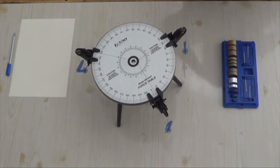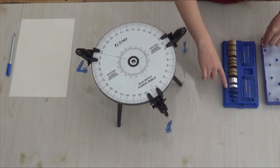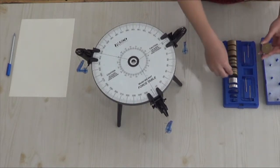As you can see from the setup, three pulley clamps and some masses will be used throughout this experiment. The masses are kept in a blue box as shown.